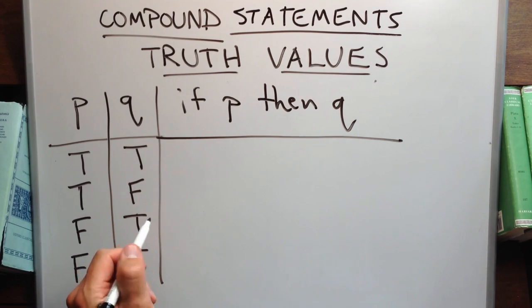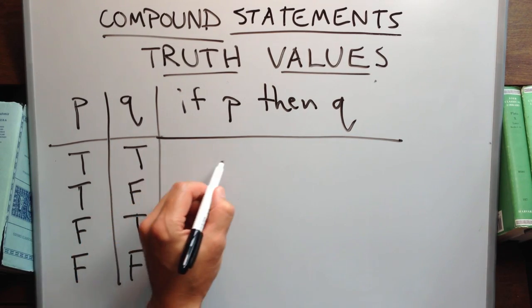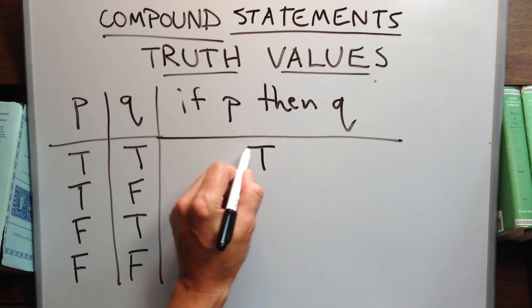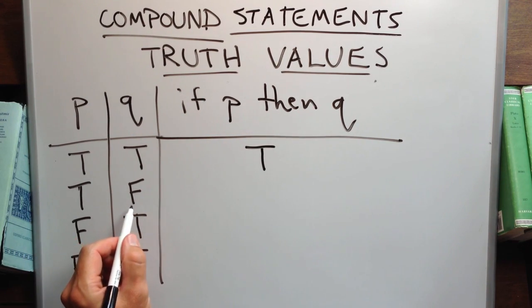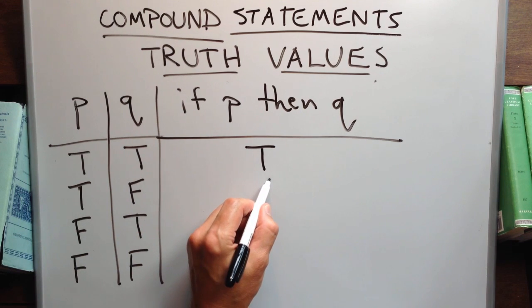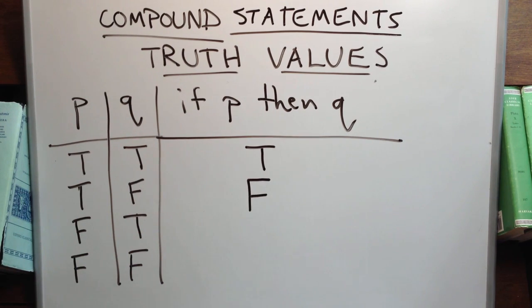Well, if Amy is singing and Ted is dancing, then the assertion, if P, then Q, seems to be true. On the other hand, if Amy is singing but Ted is not dancing, the claim is false.